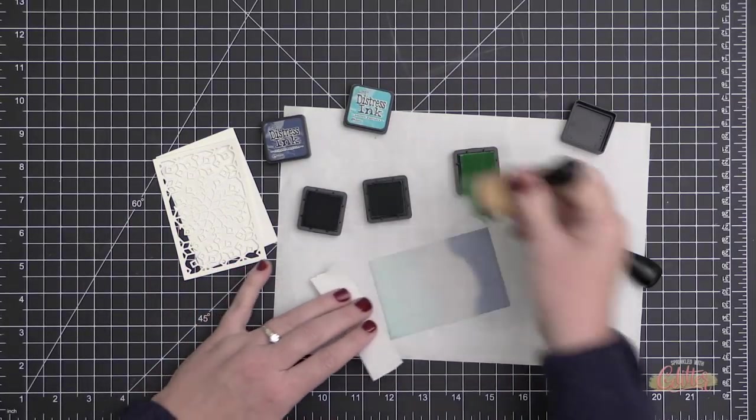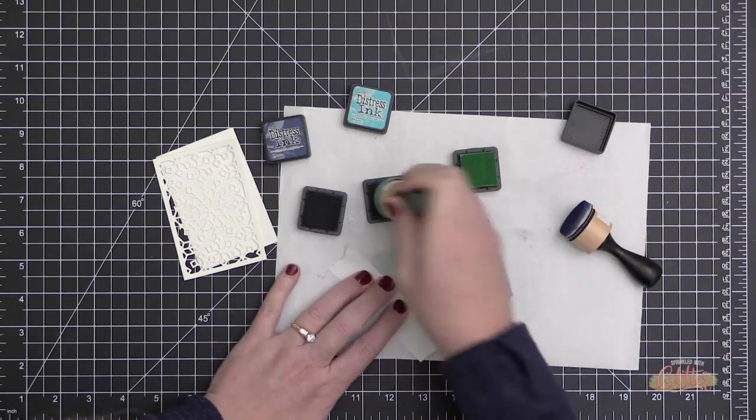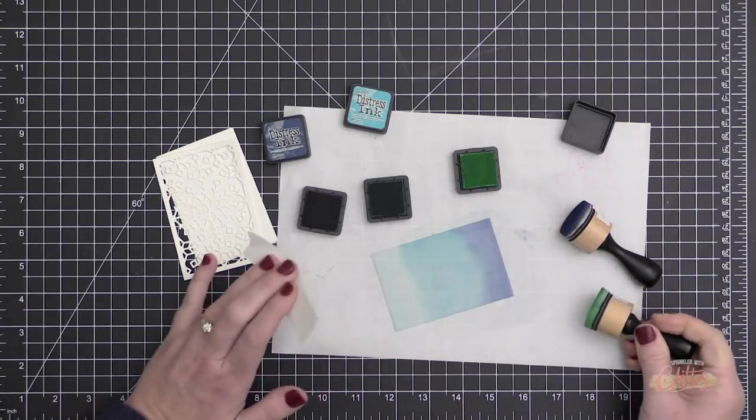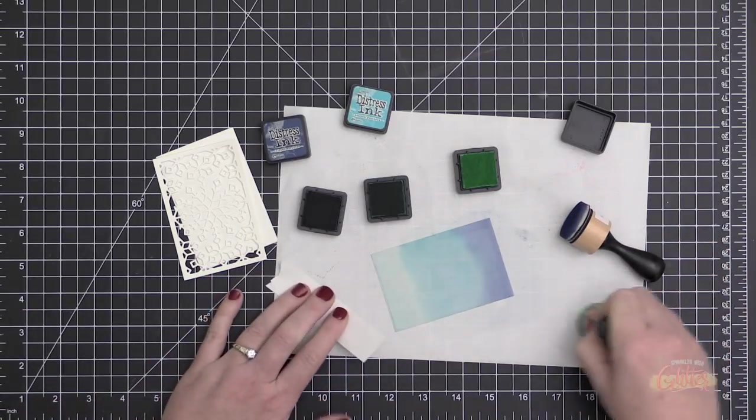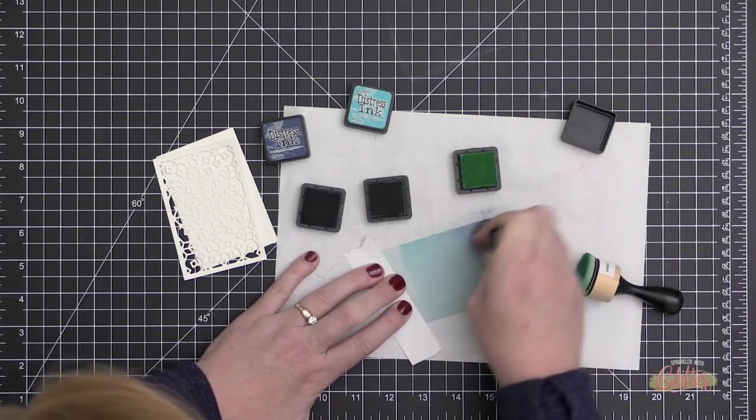So you kind of want to go a little bit slow on your blending here, because especially with those darker colors, they can quickly overtake the lighter ones. So I started on the bottom with Cracked Pistachio, added my Chipped Sapphire to the top, and then I added my Peacock Feathers in the middle.